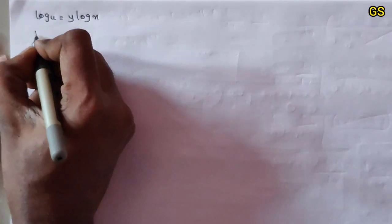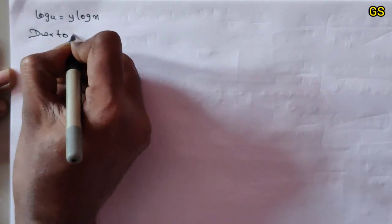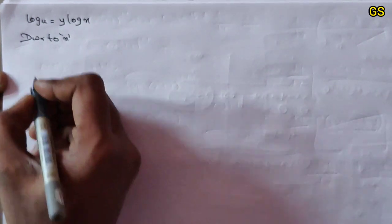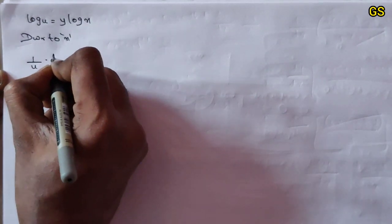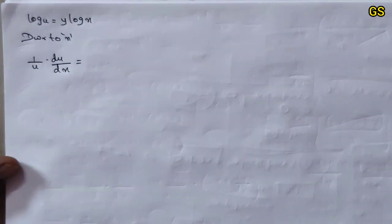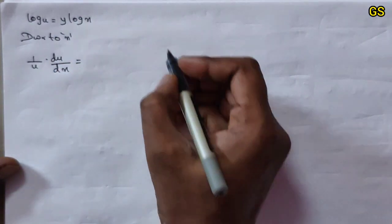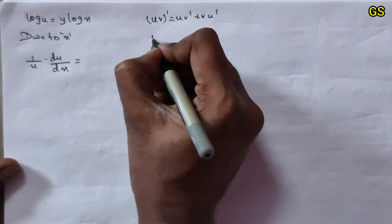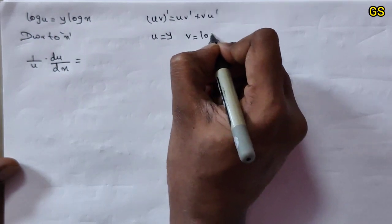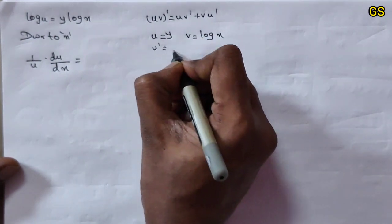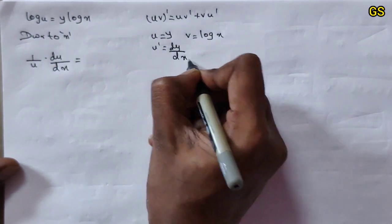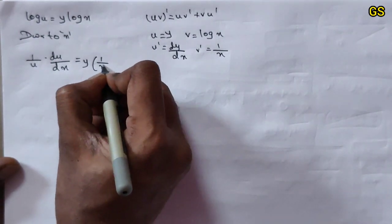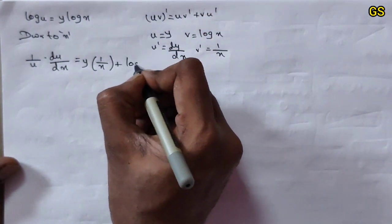Differentiating log u gives 1/u into du/dx. For the right side y into log x, use the product rule formula (uv)' = u v dash plus v u dash. Here u is y, v is log x. u dash is dy/dx, v dash is 1/x. So: u into v dash = y into 1/x, plus v into u dash = log x into dy/dx.